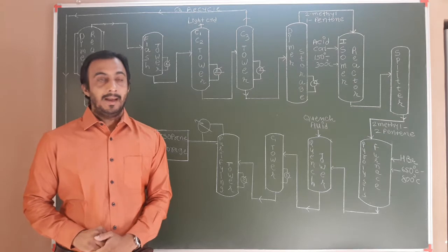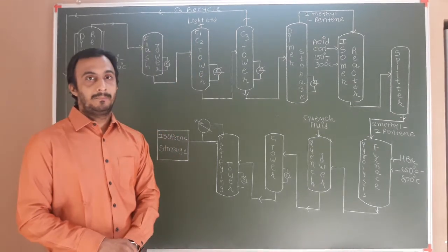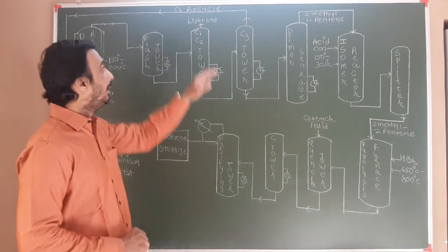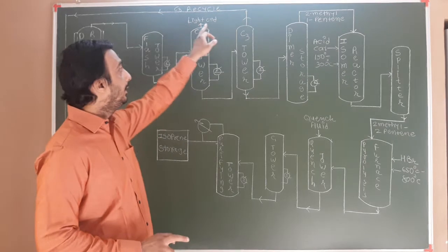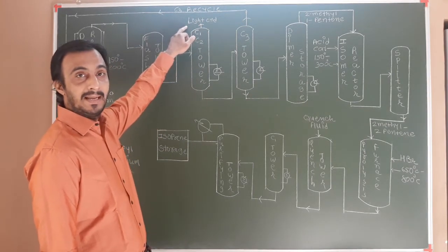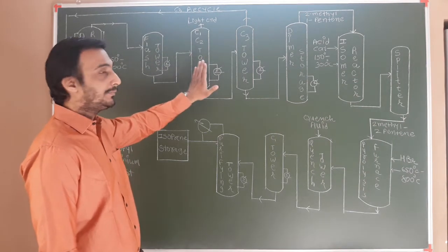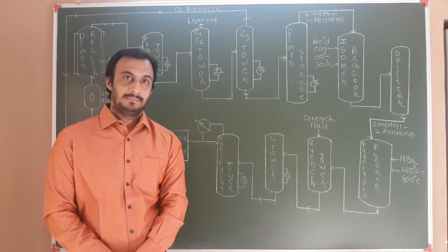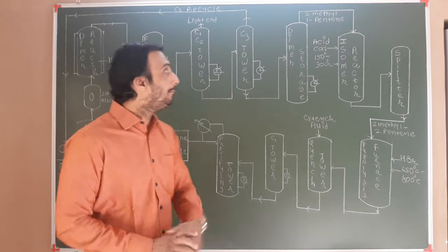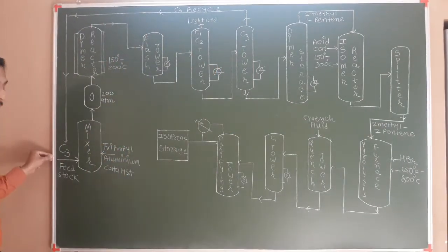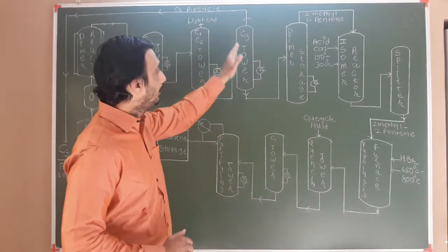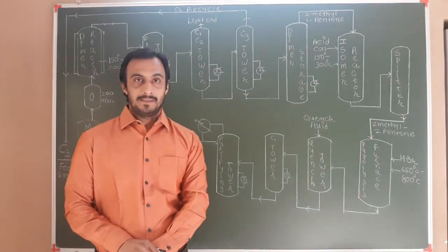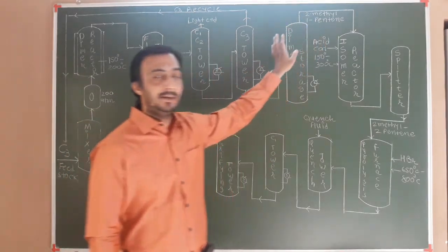The whole mass is taken into a flash tower where heating is provided by an external heat exchanger. The heated mass is then taken into a C1/C2 tower. Here, methane and ethane are discharged from the top of the tower as light gases. The remaining mass is further transferred to a C3 tower, where unreacted C3 compound is discharged from the top and recycled to the feedstock storage. After removing unreacted and impurity-based compounds, the mass is charged into a dimer storage where 2-methyl-1-pentene is stored.